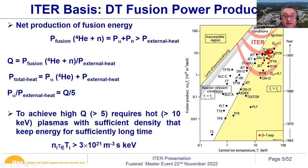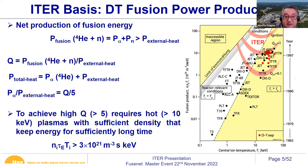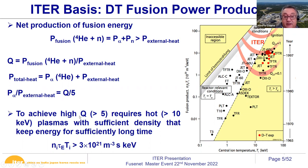Quantitatively, we define the fusion gain Q as how much energy the plasma produces relative to the external heating. The total heat into the plasma is the alpha heating plus the external heat. This gives a ratio: the self-produced power divided by the external heat equals Q divided by five. This is very important because it determines when the plasma physics is dominated by alpha particles compared to when it is not, and that is what set ITER's Q to a factor of 10.